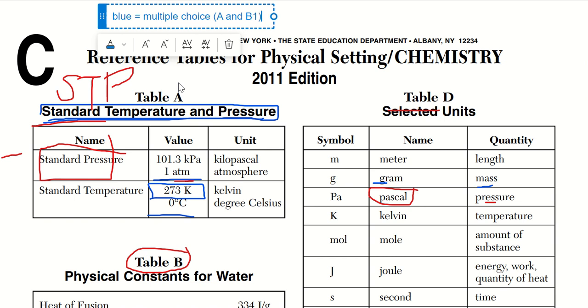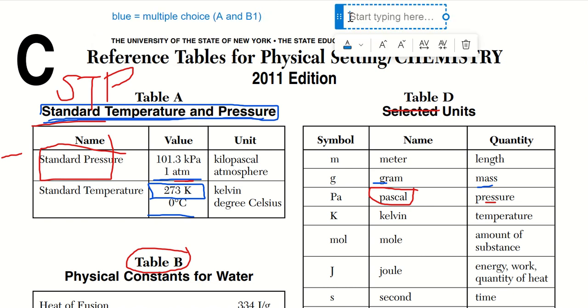So that's A and B1. And then anything that you see in red, that is when I did the constructed response. So that's B2 and C.